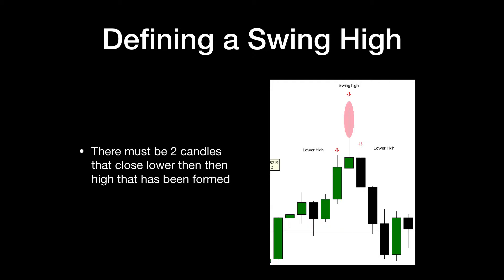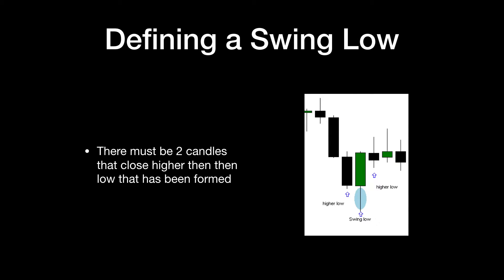Now let's look at a swing low. A swing low is the same exact thing as a swing high, just inverse. There's going to be a low, and then on each side of that swing low there's going to be a higher low. If you look in the picture, you'll see the swing low and then each candle to the left closes higher than the middle candle.